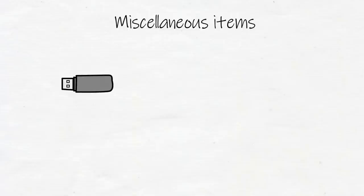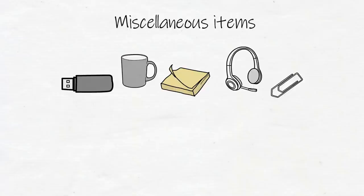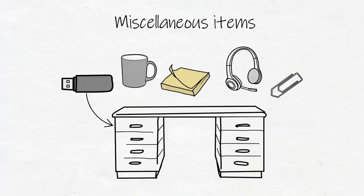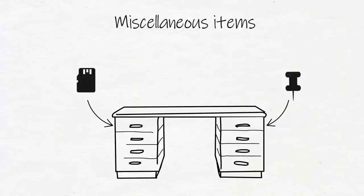After that, tackle all miscellaneous items like USB sticks, sticky notes, paper clips, electronic gadgets, coffee mugs, or supplements. When you're done sorting these using the three questions, make a space in your desk for each category of miscellaneous items. That way they're out of sight and you know exactly where new items go if you decide to keep them.